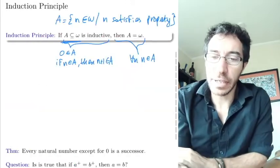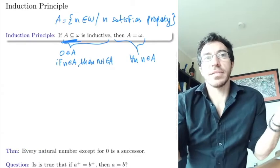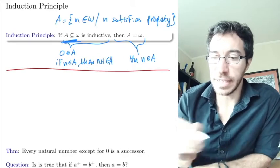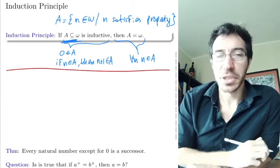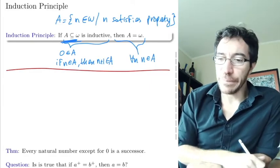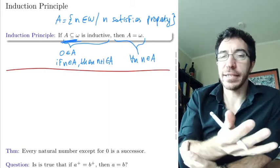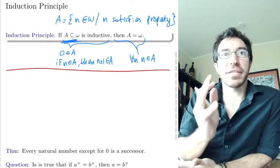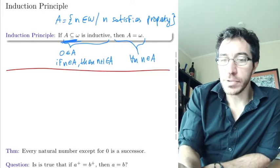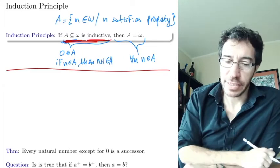So if you are a subset included in omega and you're inductive, then you have to be omega. Omega is the only subset of itself that is inductive, because it's the smallest. So this follows trivially from the definition of omega. Omega is a set that satisfies induction — essentially by definition, because it's the smallest inductive set.